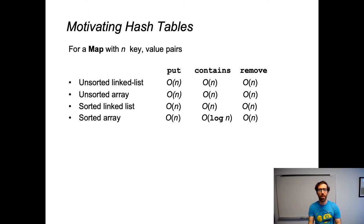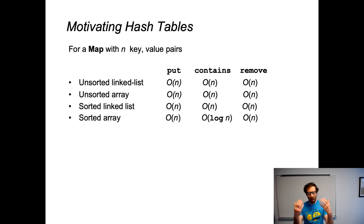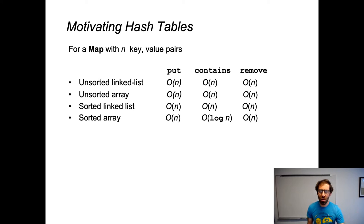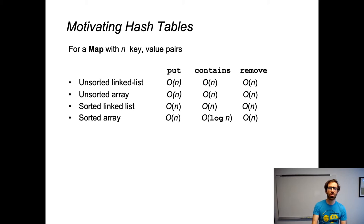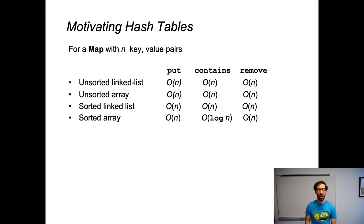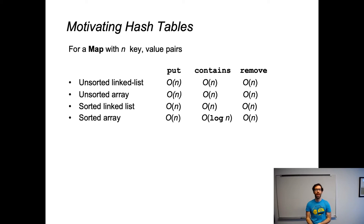We have this map abstract data type that stores some number of key-value pairs of associated data. And as we've seen, unfortunately, whether we use a linked list or array, whether we sort it or not, we can't get better than linear performance for the map ADT operations that we care about, like putting a key-value pair into the map or removing a key-value pair. This is because we had to check all the keys in our map in order to ensure the uniqueness of keys — that we would only ever have one association for a particular key — in order to make any of these operations happen.